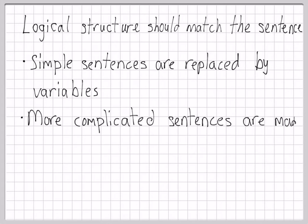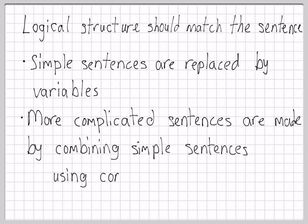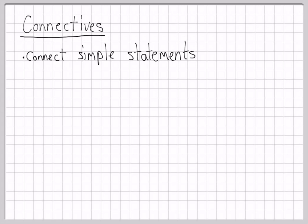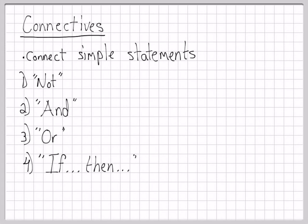For more complicated sentences, we'll combine simple sentences using what are called connectives. The connectives connect simple statements, and the four connectives are not, and, or, and then the fourth one is if, then.